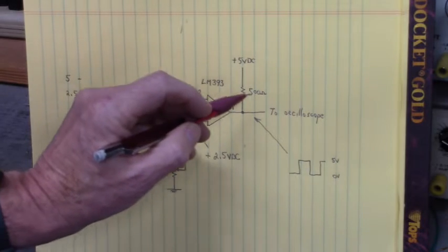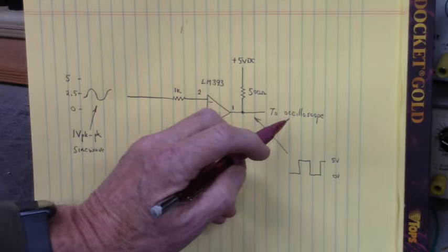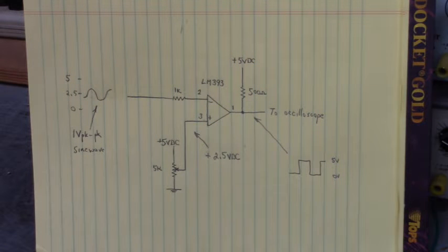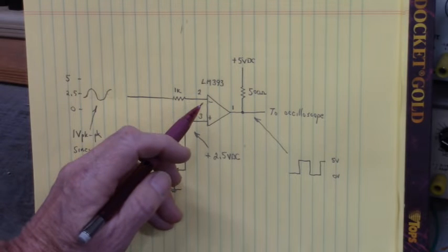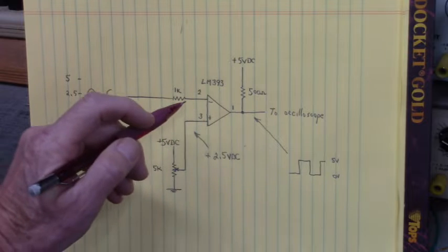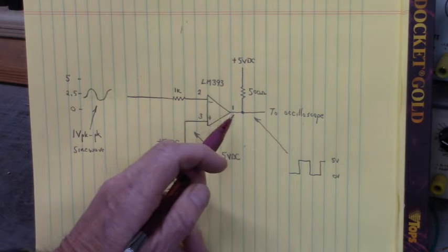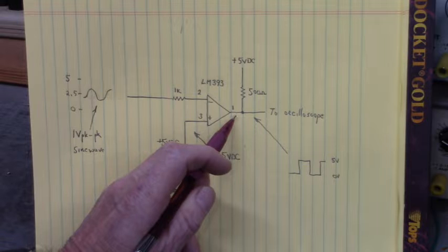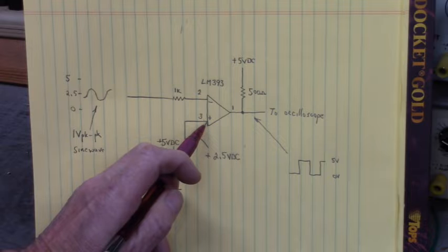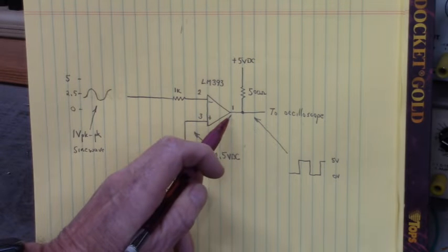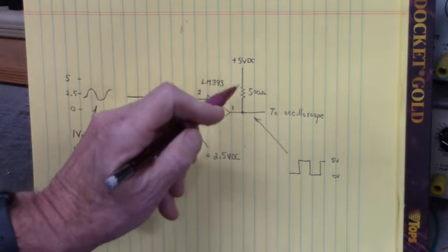The output has a 500 ohm pull up resistor and it will be connected to the oscilloscope that we will look at here in just a little bit. Now what happens is that when the inverting input voltage is higher than the non-inverting input, the output will be at 0 volts. When the inverting input is lower than the non-inverting input, the output will be high. It will be pulled up through this 500 ohm resistor to 5 volts up here.